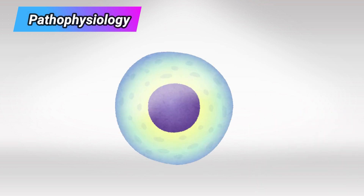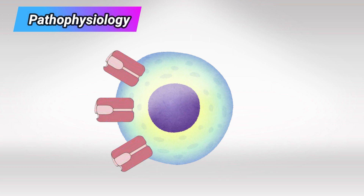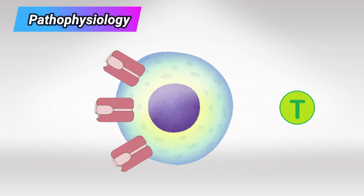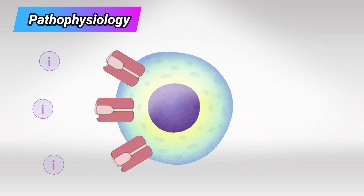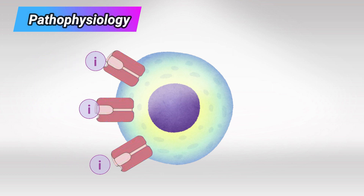Let's say hypothetically that we need three receptors to be activated by iodine to release thyroxine, and we normally ingest three iodine per day. Again, this is just a crude example to make things clearer. So on a normal day we would ingest three iodine, the three receptors would be stimulated, and thyroxine would be produced.